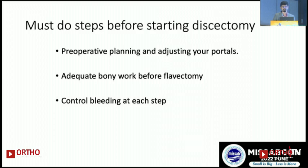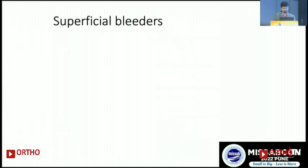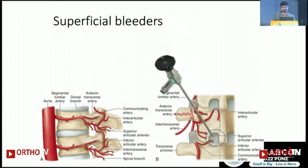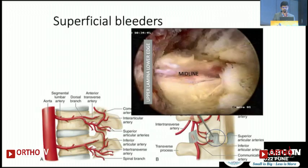Bleeding control is precisely what is required — it is of utmost importance for a good surgical outcome and technical precision. The bleeders are generally at the 5 o'clock, 6 o'clock, and 7 o'clock positions. If you can visualize the bleeders you can tackle them directly, but if visibility is poor you can coagulate blindly at 5, 6, and 7.